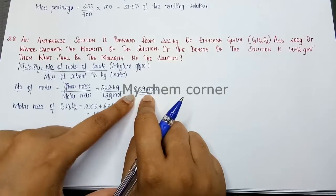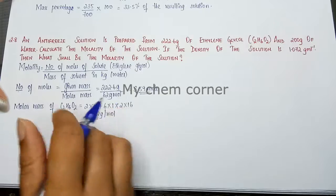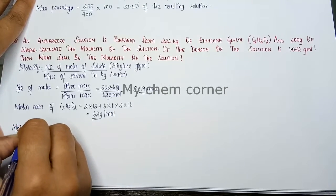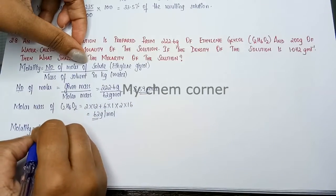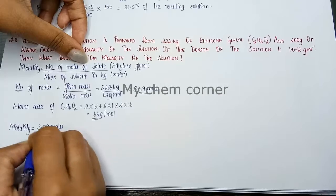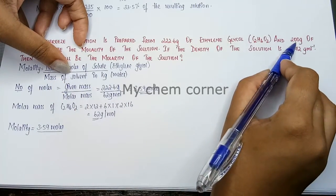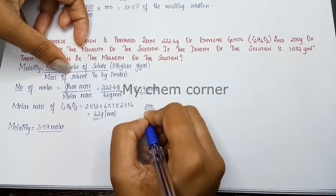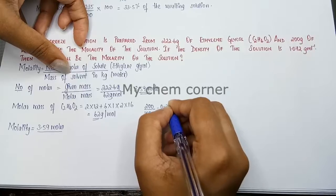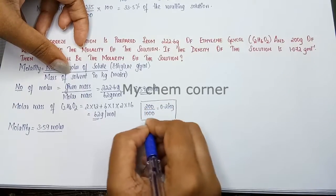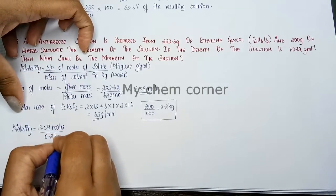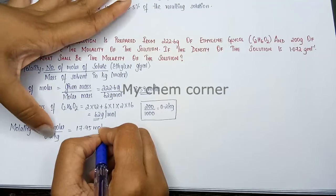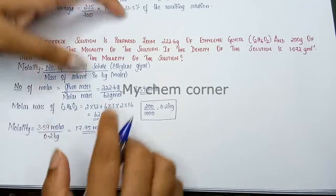Now substituting into the molality equation: molality equals 3.59 moles divided by mass of solvent in kg. Mass of solvent is 200 grams, converted to kilograms that is 200 divided by 1000, giving 0.2 kg. Dividing 3.59 by 0.2 gives a molality of 17.95 moles per kg.